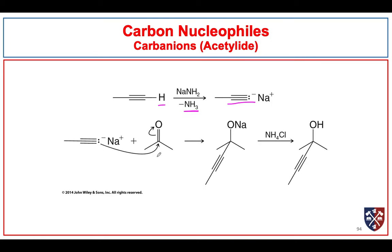Here we're showing the acetylide reacting with acetone to form a bond between the carbonyl carbon and the alkynyl carbon. Here's the new bond that's been formed. We then have to work this reaction up with a source of protons — we only need a mild aqueous acid for the workup to protonate that negatively charged alkoxide. We get these reactions in high yield. This is a very simple reaction, but it is a way to make secondary and tertiary alcohols which have an alkyne group in the alpha-beta position to the alcohol.